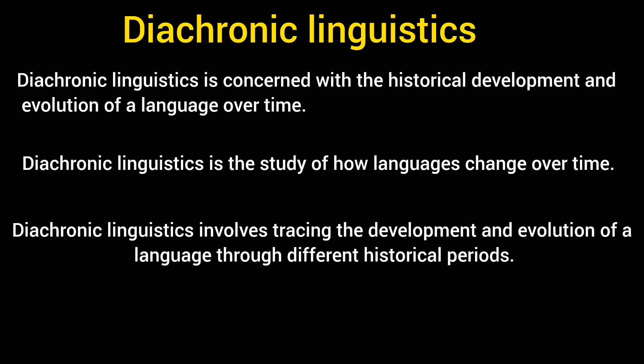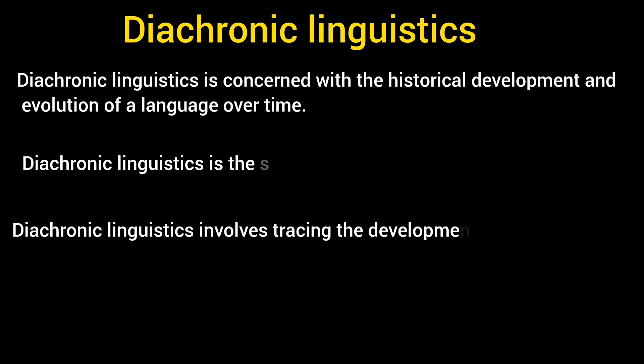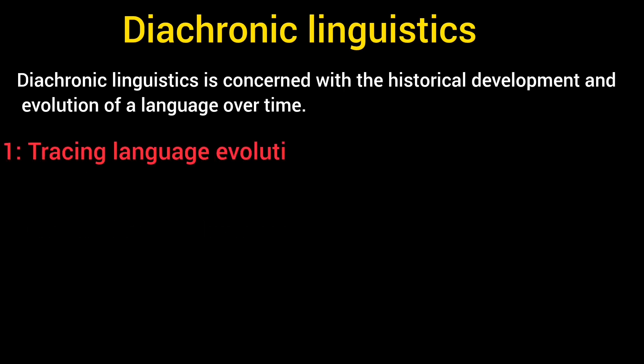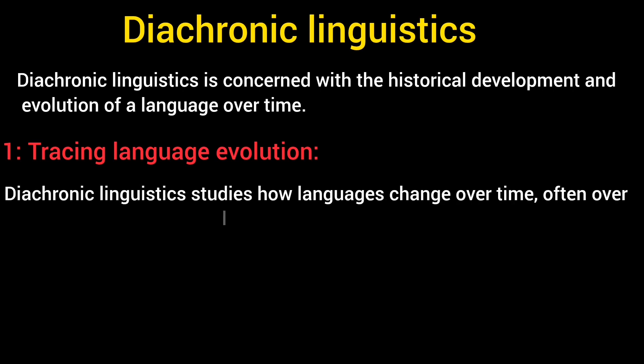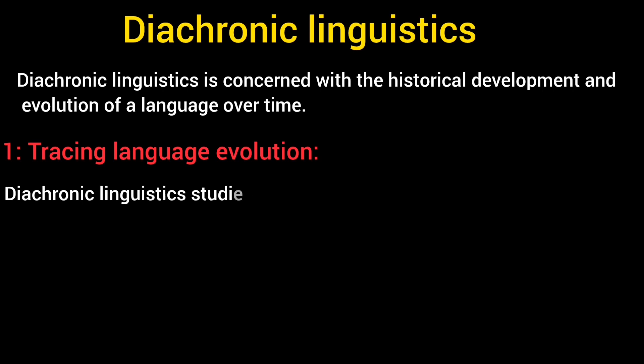The first key point of Diachronic Linguistics is tracing language evolution, meaning it studies how languages change over time, often over long historical periods. Linguists examine texts from different periods to observe changes in language use.